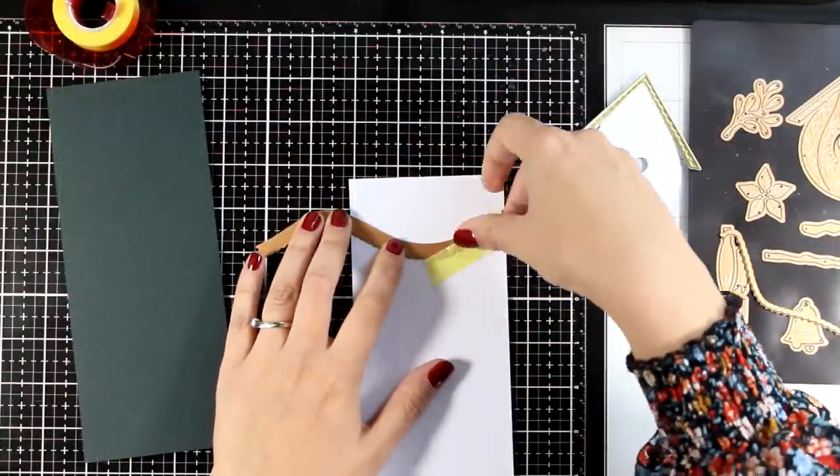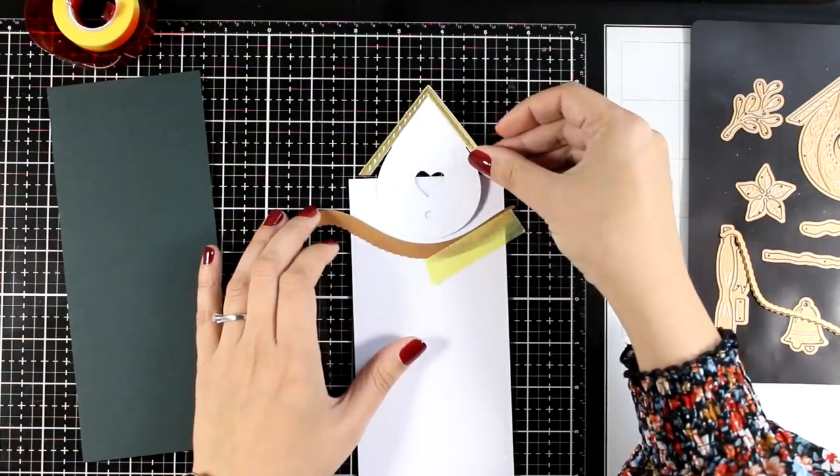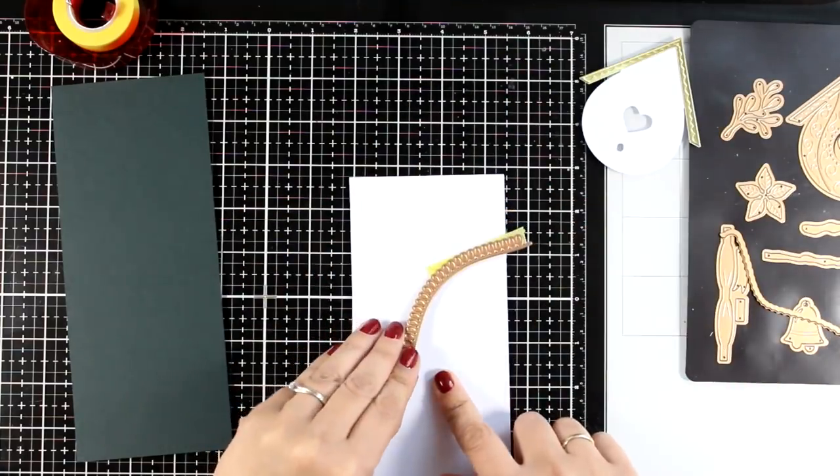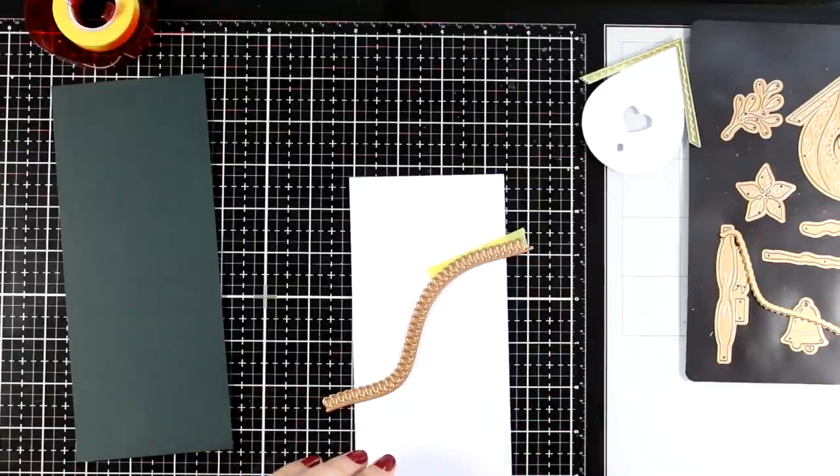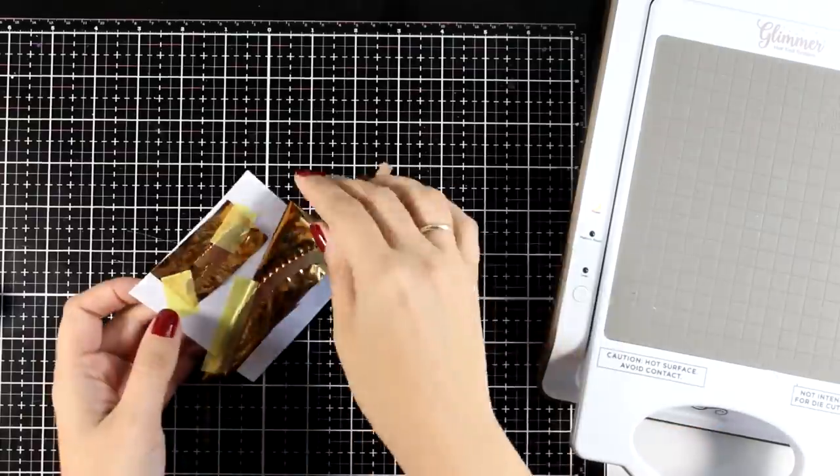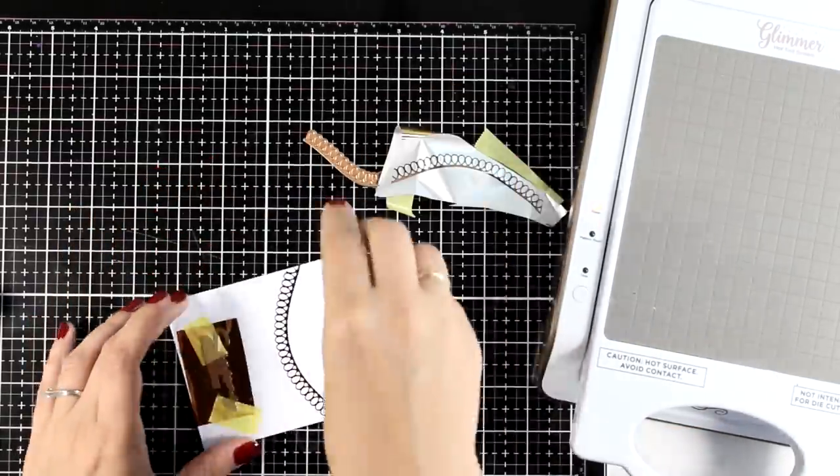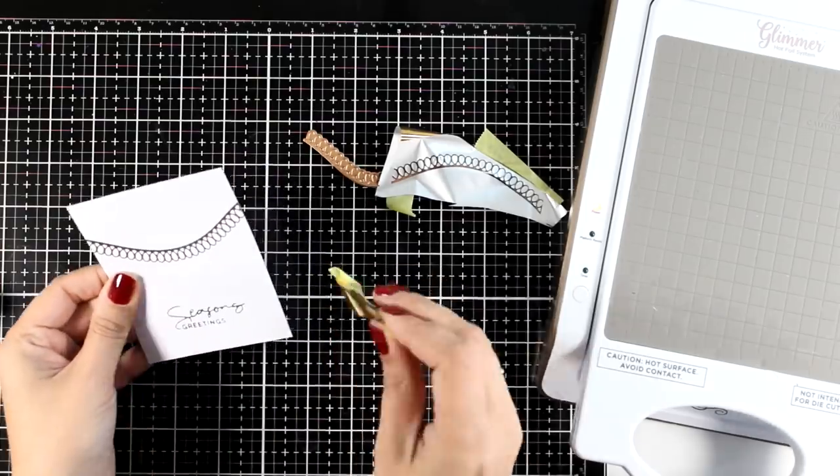I'm using one of the foiling plates that has a lovely decorative design on a piece of white cardstock. This is three and a half in width if you want to know the exact measurements. And at the same time I'm going to do the foiling of the sentiment that I'm going to use for this card.